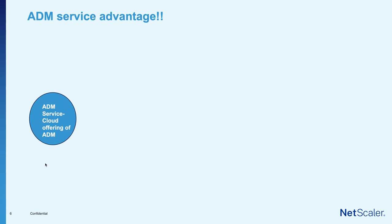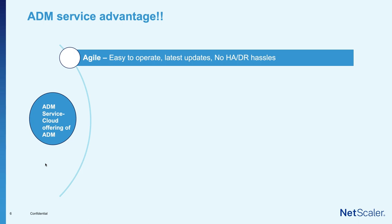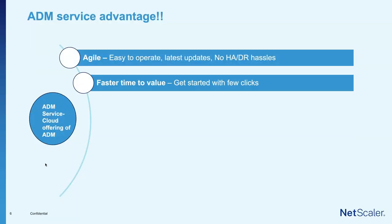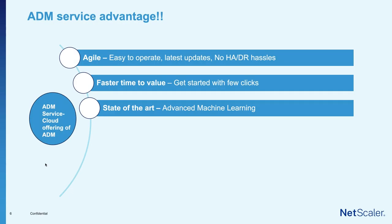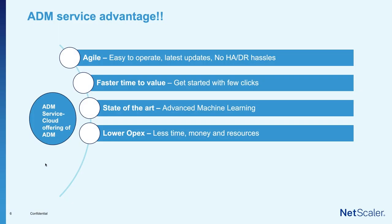What are the advantages? It's very agile — easy to operate. All the latest updates get prioritized and pushed through bi-weekly updates. There is no hassle of high availability and disaster recovery unlike on-prem environments. It's a faster time to value — you get started within very few clicks. You also get state-of-the-art advanced machine learning: once applications are discovered, the ML engine analyzes traffic patterns and highlights anomalous behaviors and predictions.